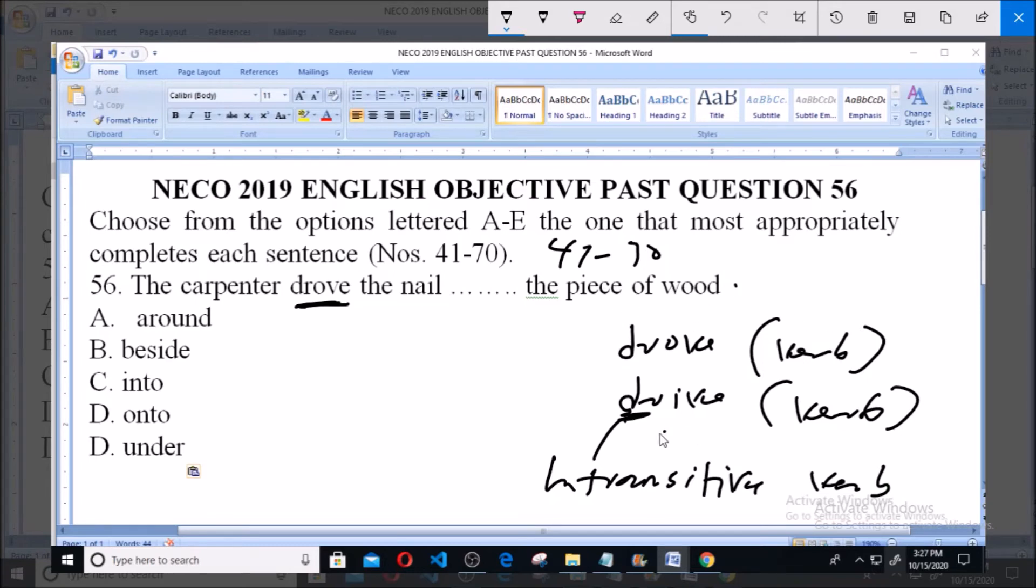So now, the carpenter drove the nail dash the piece of wood, and the function of this verb is not to affect any object. The options are: A - around, B - beside, C - into, D - unto, E - under. By the analysis or the condition of this verb...